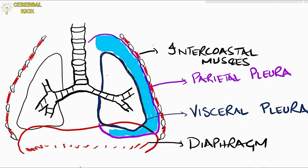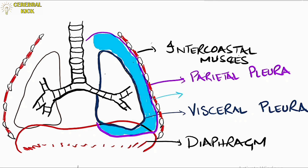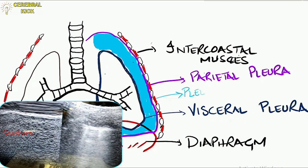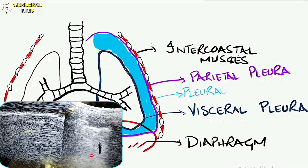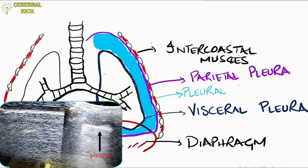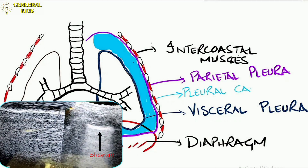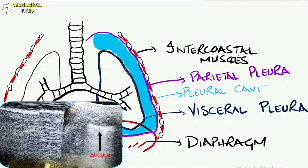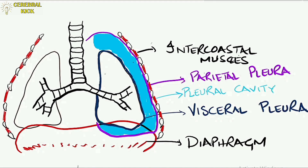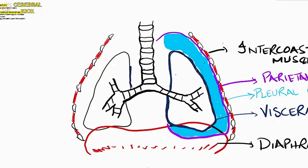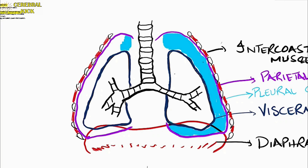Note that the pleural cavity is not as huge as depicted in the diagram. For example, on ultrasound of the chest you can see the two pleural layers sliding against each other — the gap between them is just a potential space, not nearly as large as drawn here for conceptual purposes.